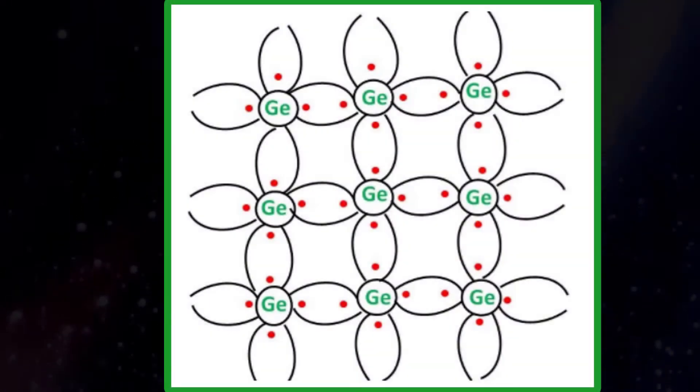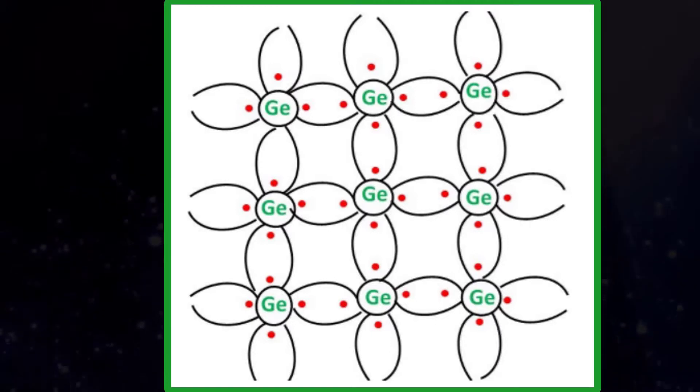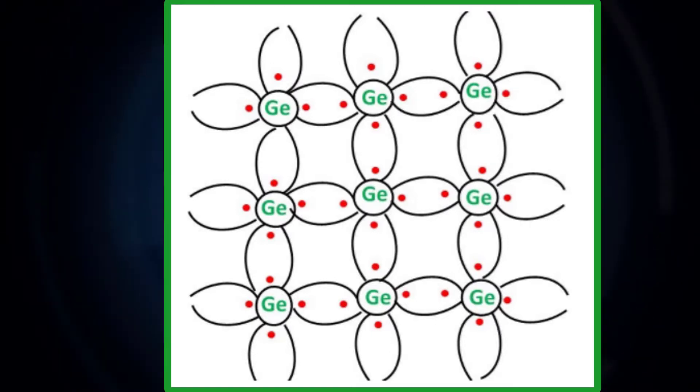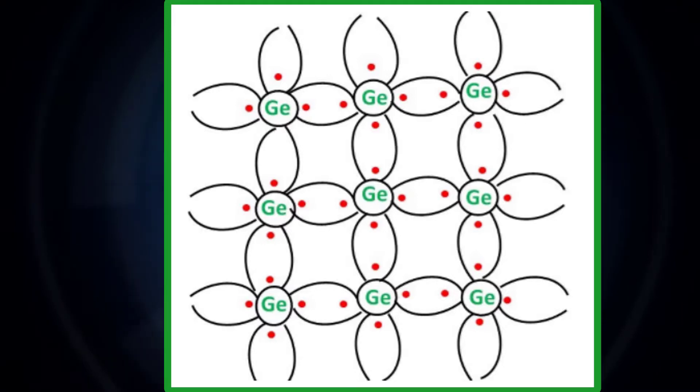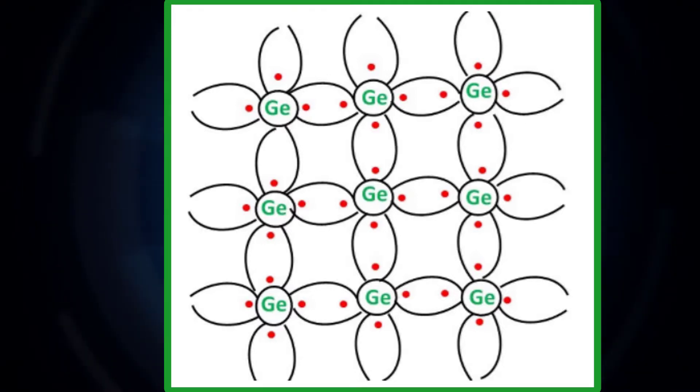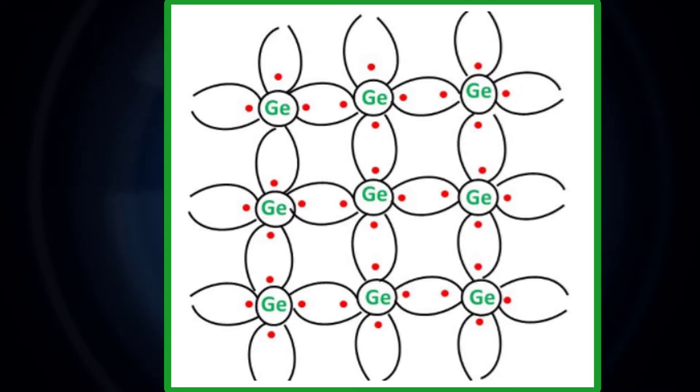When a few pentavalent impurities such as arsenic whose atomic number is 33 which is categorized as 2, 8, 15, and 5, it has five valence electrons which is added to germanium crystal.